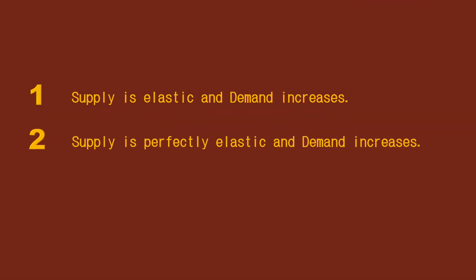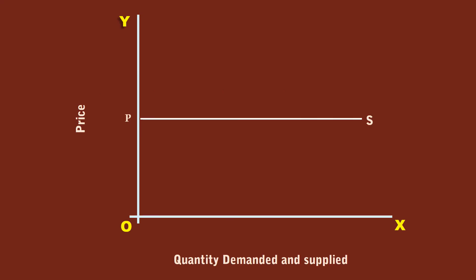Case 2: Supply is perfectly elastic and demand increases. The supply is perfectly elastic, hence the supply curve is horizontal and parallel to the X axis. PS is the supply curve. The market is in equilibrium at E1, where demand curve DD and supply curve PS cut each other. The consumers buy M1 units.